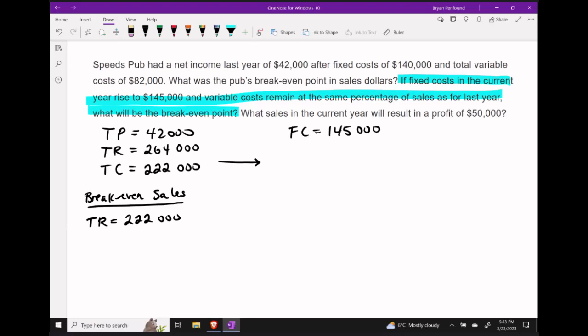Next we want to determine the percentage of sales that variable costs were last year. Taking our variable costs of $82,000 and taking our total revenue of $264,000, we can see that the variable costs were about 31.06% of total sales last year.